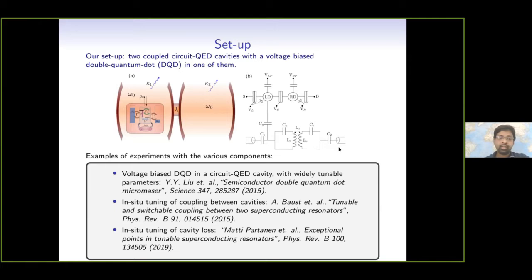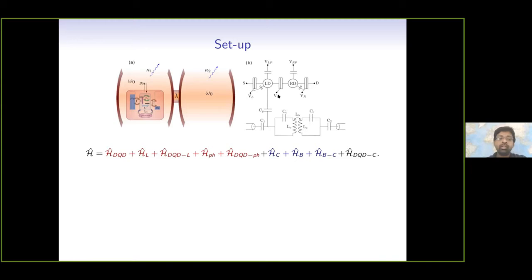This is one experiment where there is a voltage-biased double quantum dot — there are many others. In-situ tuning of coupling between cavities is shown in this experiment, and in-situ tuning of cavity losses appears in this experiment and many others. For the theoretical description, we take a completely microscopic approach: we write down Hamiltonians for everything, including the baths that give the losses, the fermionic leads, and also some phonons.